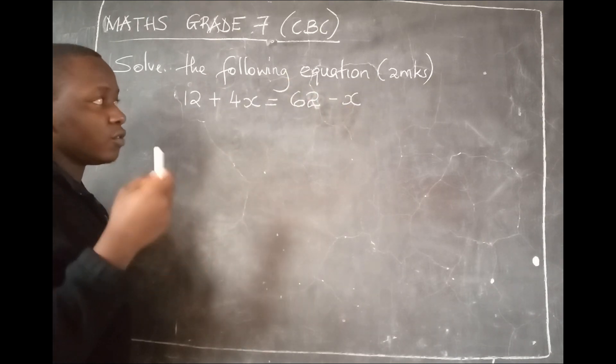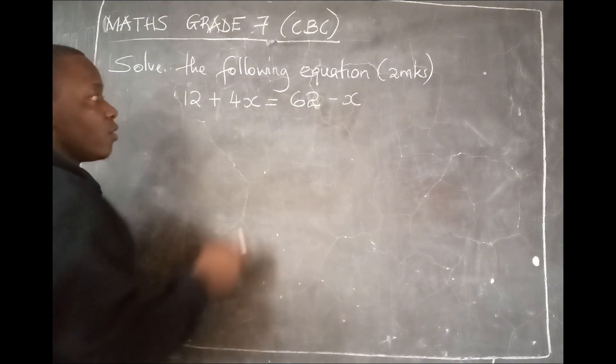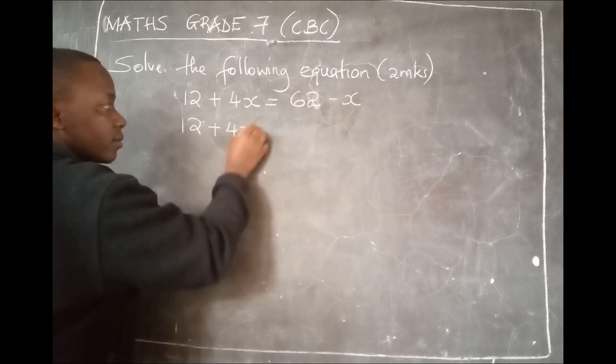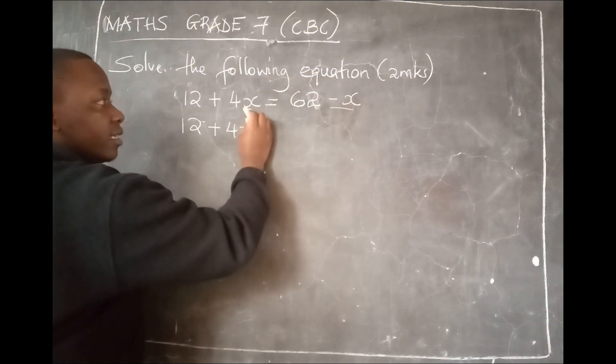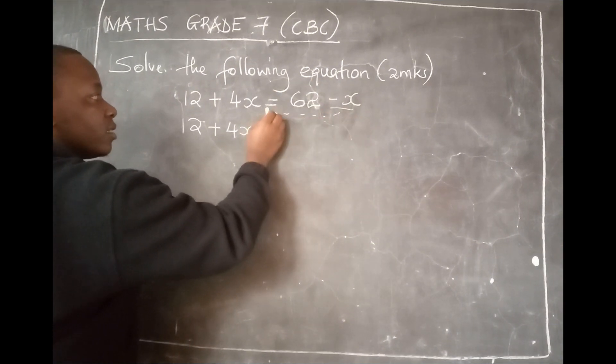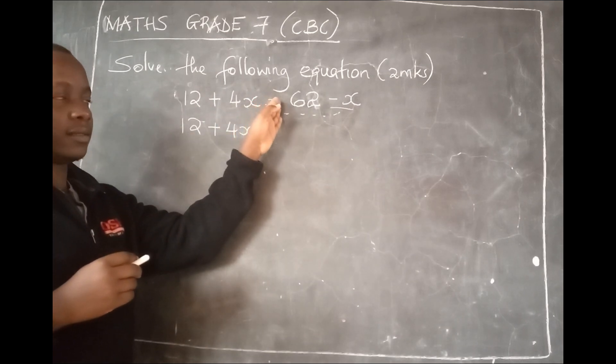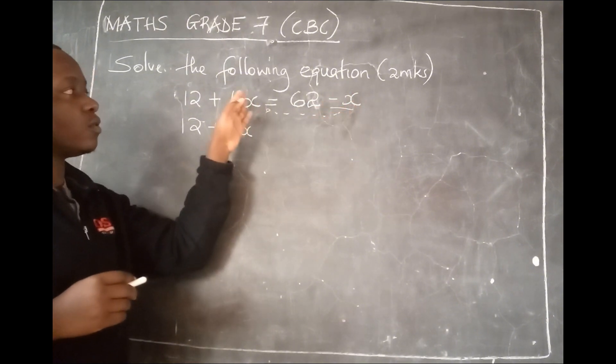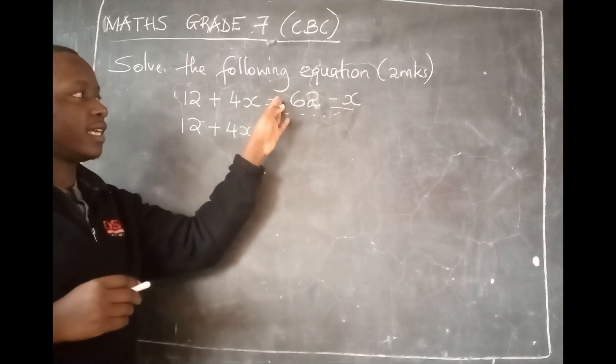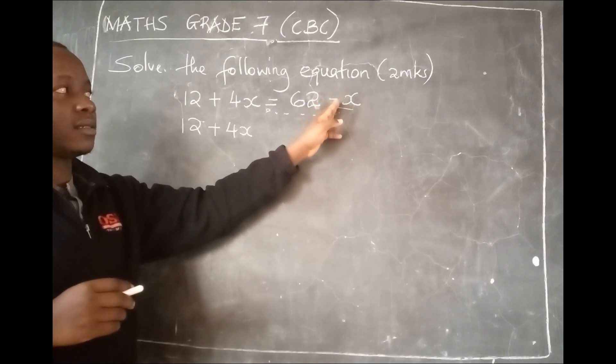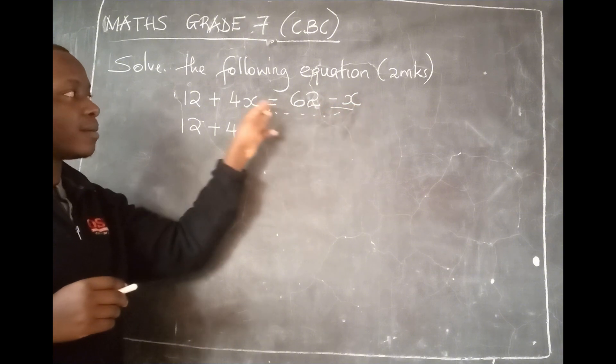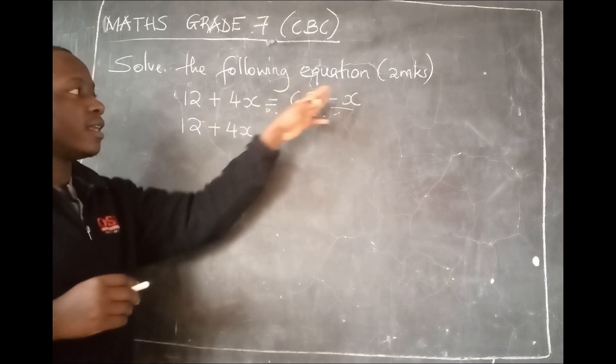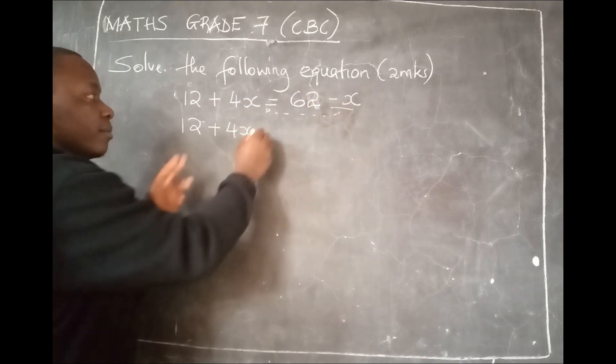And that is how you'll have brought the like terms together. We shall start by saying 12 plus 4x. I start by bringing this x to this side. If I bring x to this side, this minus x, when it passes the equal sign, this sign changes. It will become plus x.